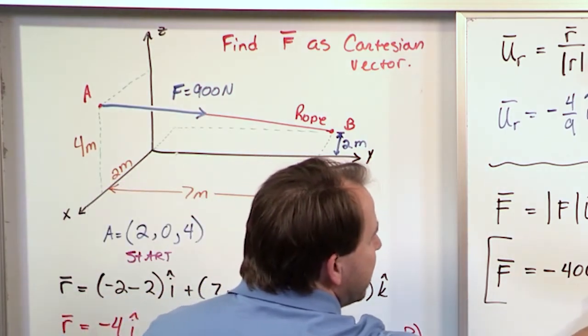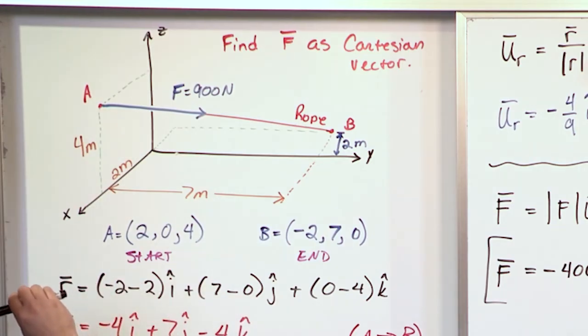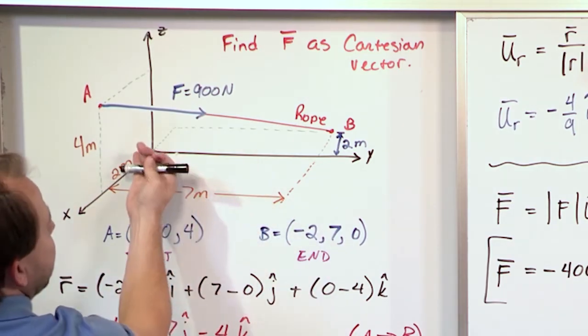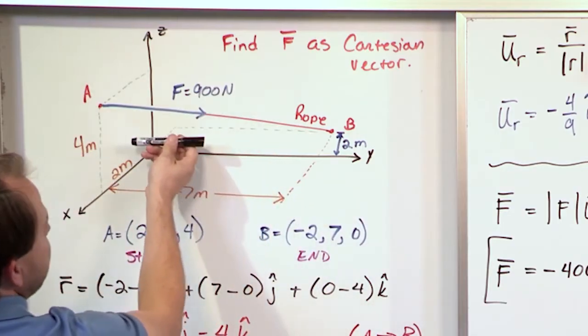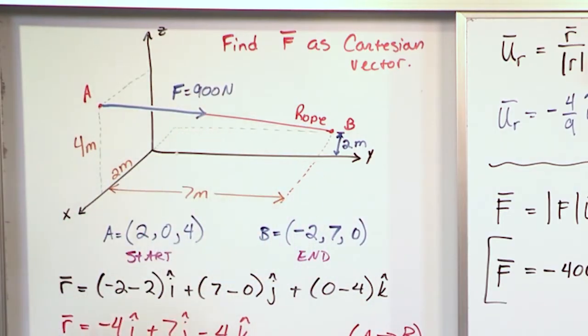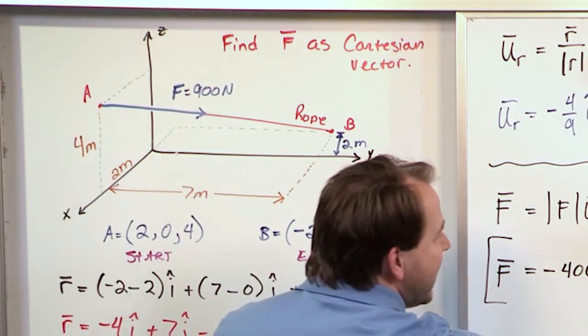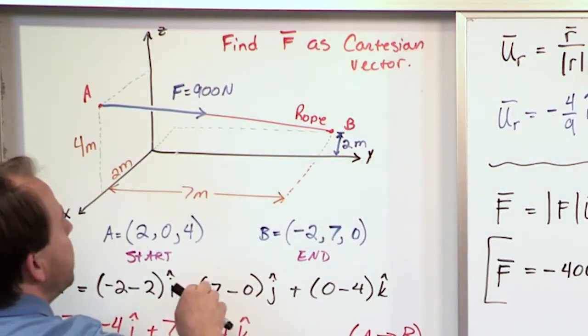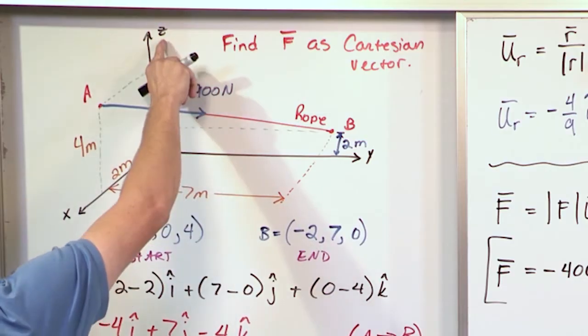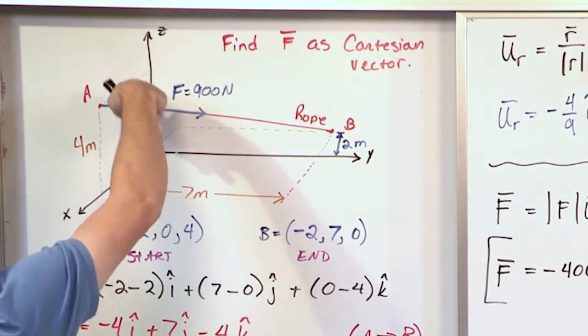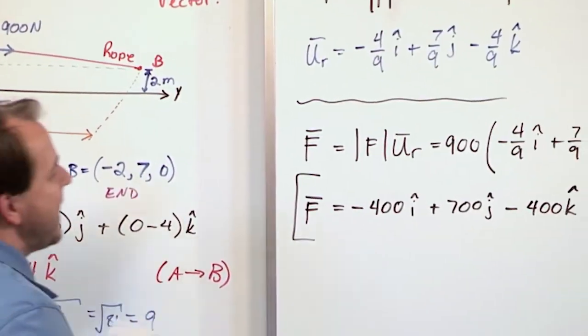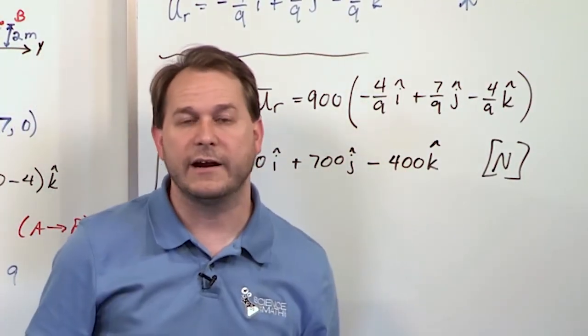And then here, 700 is in the j direction, which is in the y direction. Y in this drawing is along this direction here, so we have the largest component, 700 newtons in that direction. And then negative 400 in the k direction means negative z, which is pointing down, because this is positive z, so negative z is pointing down, notice the vector is trending down, and that has 400 newtons in that direction.